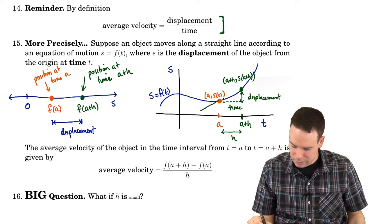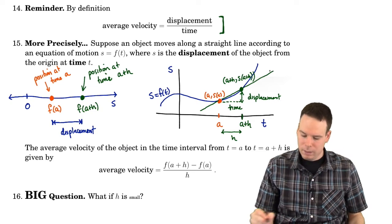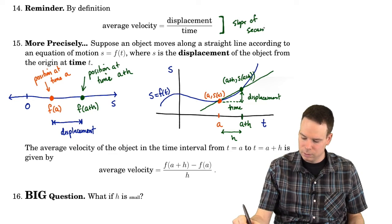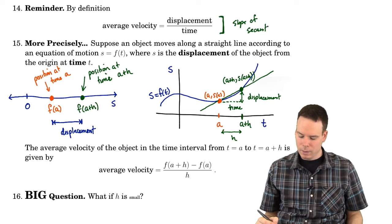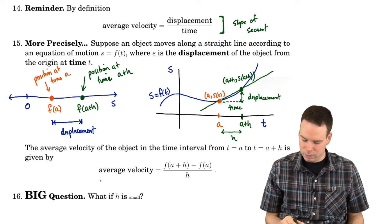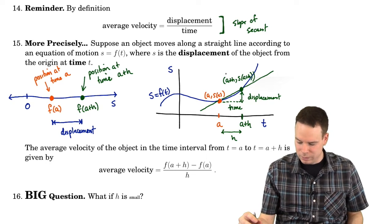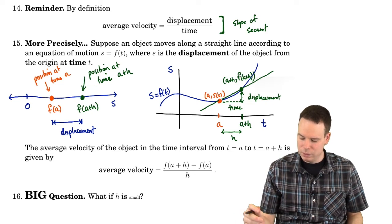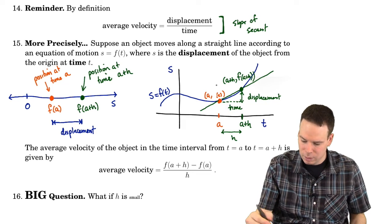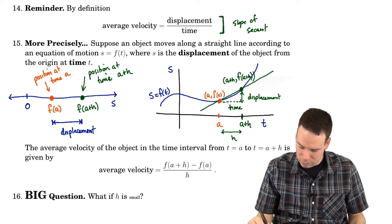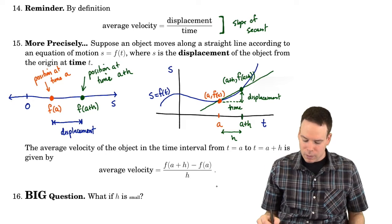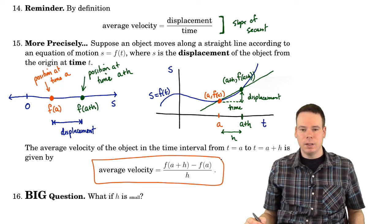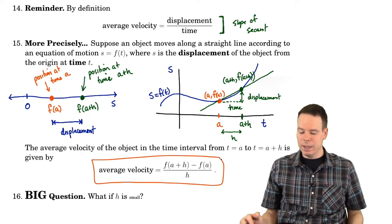The slope of this secant line is the average velocity. The slope of the secant. And so that's what we've written down here. I've used s in place of the function name. I probably should have used f. Sometimes we default to just using s as the name of the function. But maybe I'll be more explicit here. So our function was really f in this case.